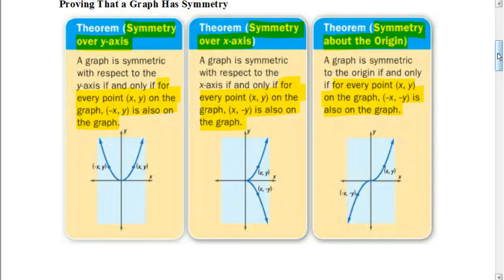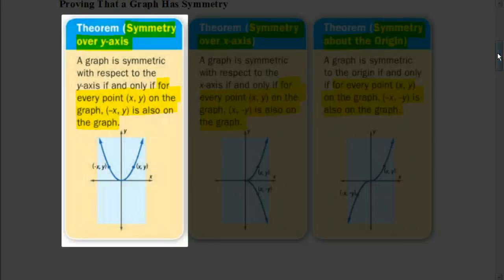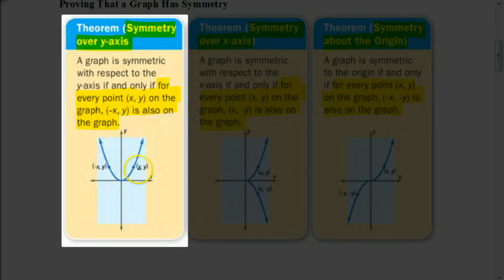Let's look at the first theorem for determining whether something has symmetry over the y-axis. Basically, for every point (x, y) in the graph, the point (-x, y) is also on the graph. In other words, the y-values stay the same, and if there's symmetry over the y-axis, the x-values are going to have the opposite values. An example would be a parabola, where a point (x, y) in quadrant 1, when reflected over the y-axis, keeps the same y-value but the x-value is its opposite.